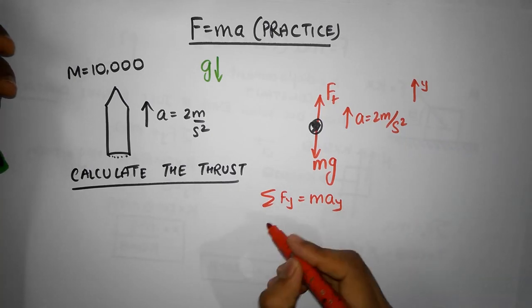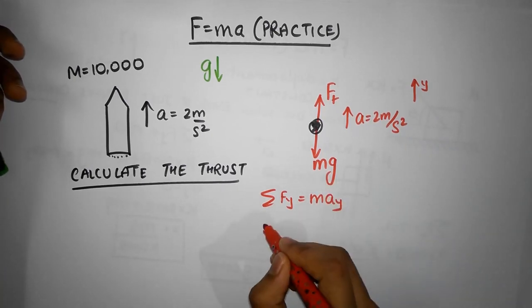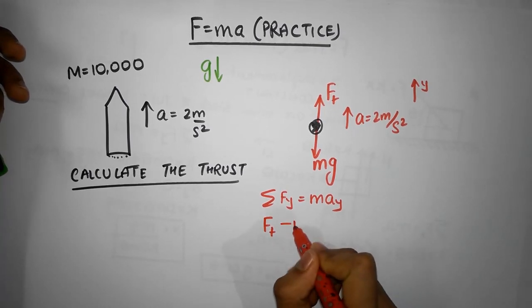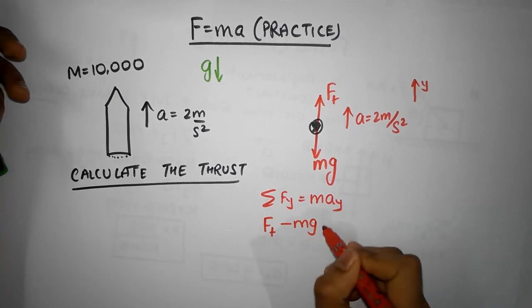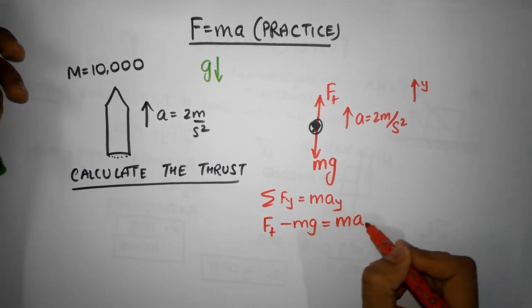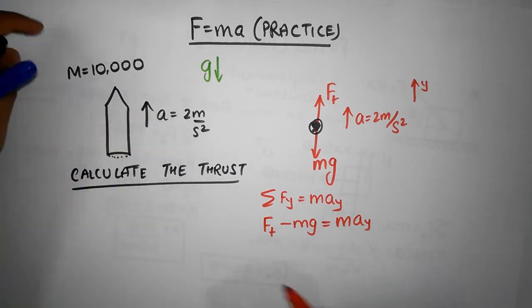And upward direction is positive, so thrust force is positive, mg is negative because it's downwards. That should be equal to mass times the acceleration in the y-direction. There's only one unknown, so thrust force must be equal to mg plus ma.